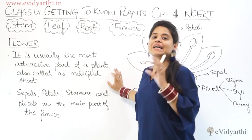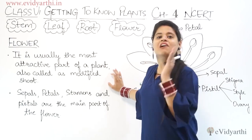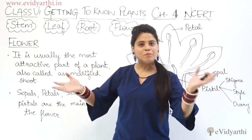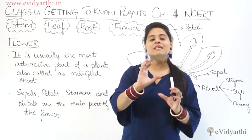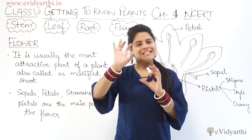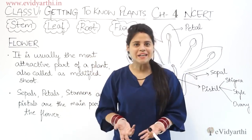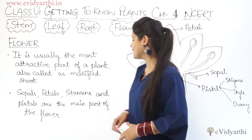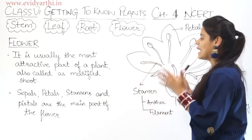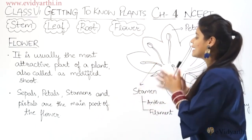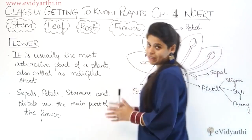We have modified stem also. Basically, flower — if you read the scientific term — it means it is just a modified stem. It is a plant particle. Sepal, petal, stem, and pistil are the main parts of a flower.